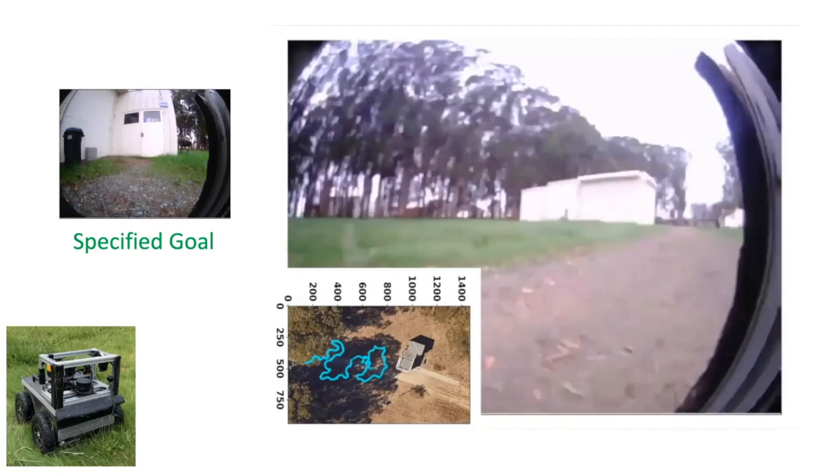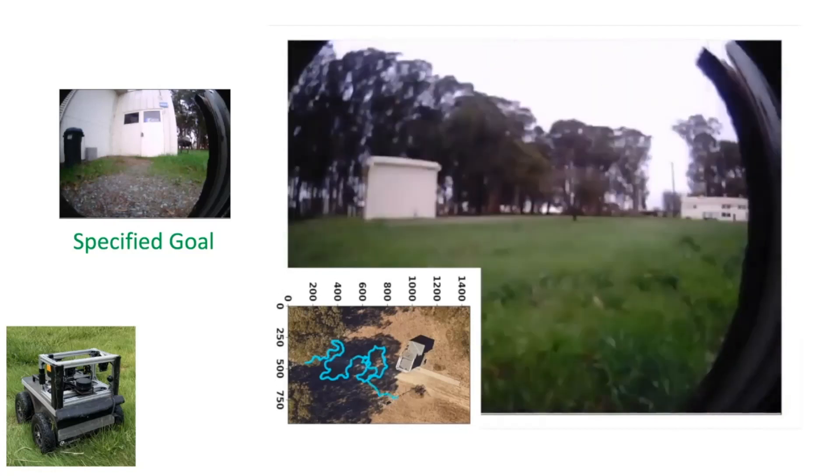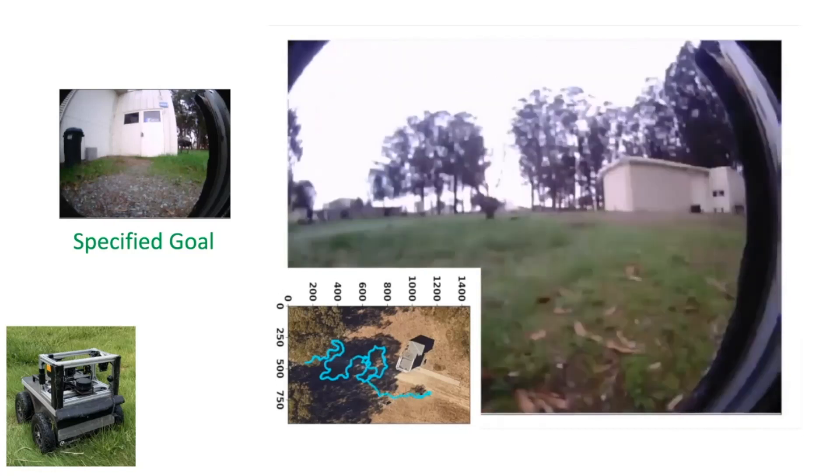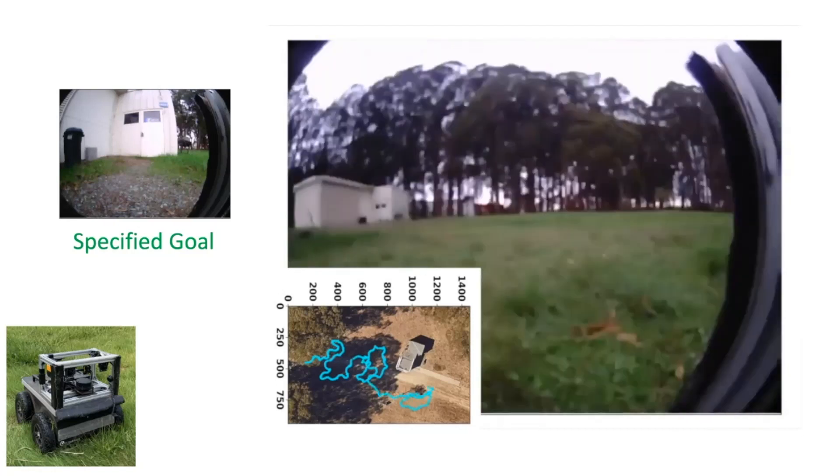In this setting, spatial maps are not available for localization, which means that the robot must explore solely using visual observations to discover the goal.